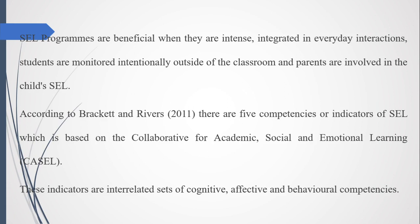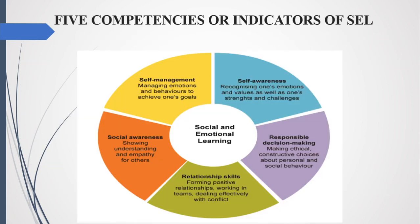According to Brackett and River, 2011, there are five components or indicators of SEL, which is based on the Collaborative for Academic, Social and Emotional Learning. These indicators are interrelated sets of cognitive, affective and behavioral competencies. Let's look at the five competencies or indicators.